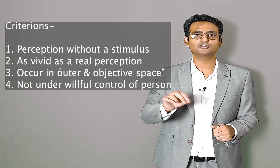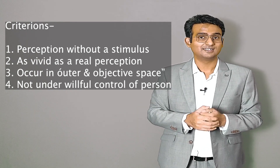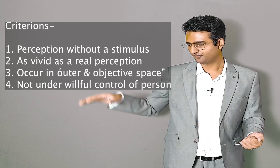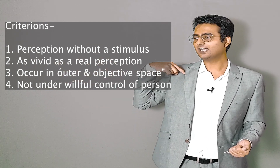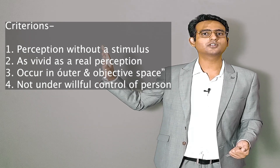The fourth criterion is that hallucinations are not under the willful control of the person. Neither can I start the hallucination nor can I stop it. If I hallucinate a man standing next to me, I cannot make him appear or disappear — I do not control him. In contrast, imaginations are under our control: whenever I wish, I close my eyes and see my mother's face; whenever I wish, I open my eyes and she is gone.